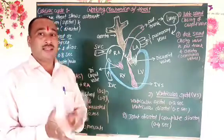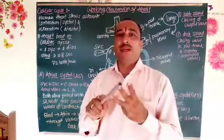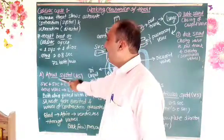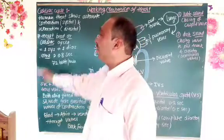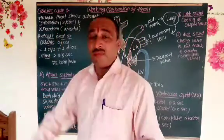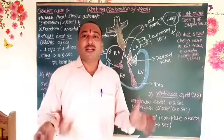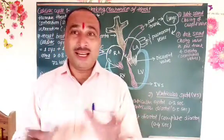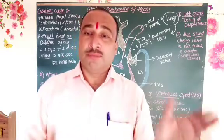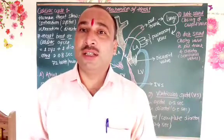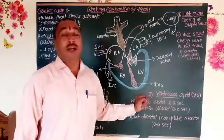We divide the cardiac cycle into three parts. The first part is atrial systole — that is, atrial contraction. The second part is ventricular systole — ventricular contraction. And the third part is joint diastole, where all four chambers are relaxed.